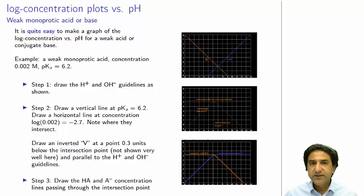Okay, so we're going to take our usual example of a weak monoprotic acid in solution, and we're going to see how the amount of that monoprotic acid and its conjugate base changes with pH. So you have to go through a number of steps. In this example, we're going to take a weak monoprotic acid, concentration 10 to the minus 2 molar, pKa 6.2.